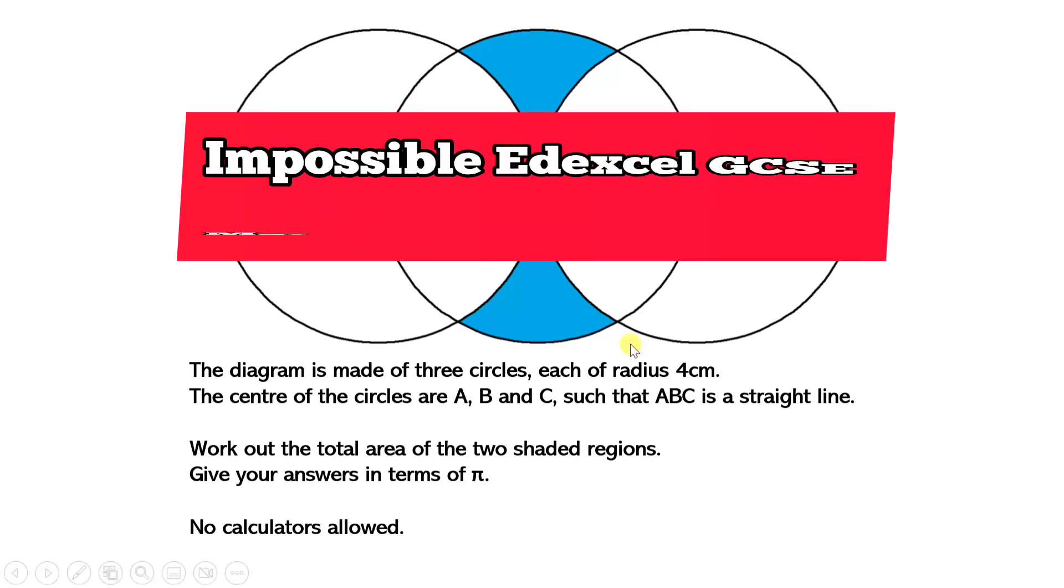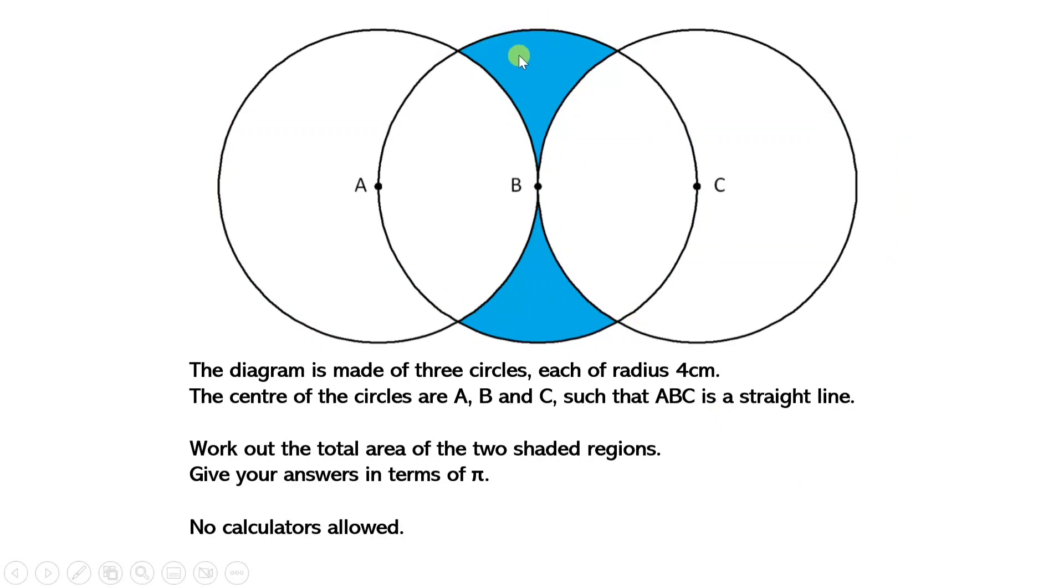This involved three circles and they wanted us to work out the shaded blue region. Now, let's read the question first. So, the diagram is made of three circles, each of radius 4cm.